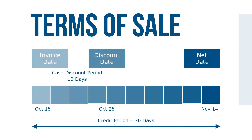This exhibit shows a timeline of the discount period and credit period on an invoice dated October 15th. The 2/10/N/30 terms of sale stipulate a cash discount if the bill is paid within 10 days; if not, the balance is due in 30 days. The cash discount period runs for 10 days from the invoice date, October 15th through October 25th. The credit period of 30 days extends from the invoice date through November 14th.